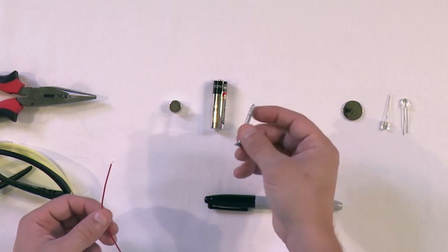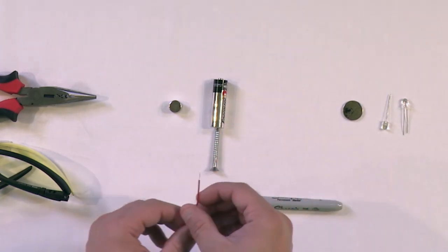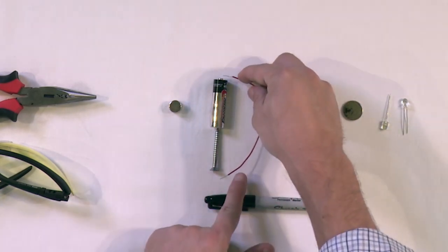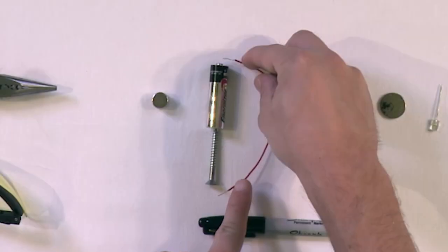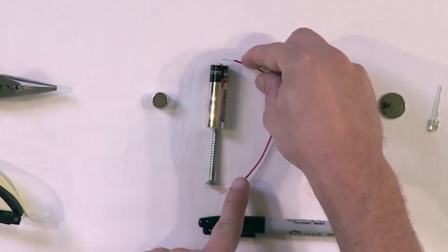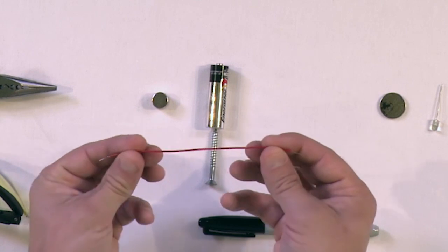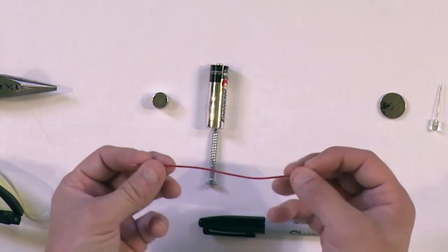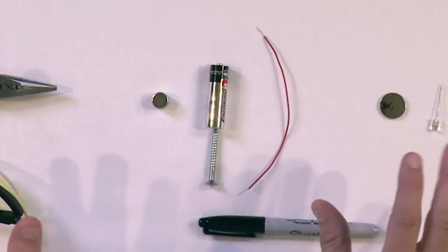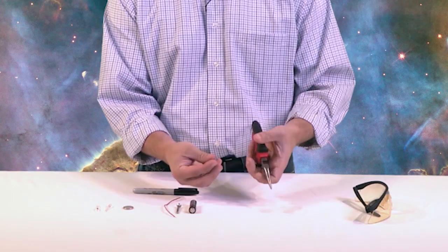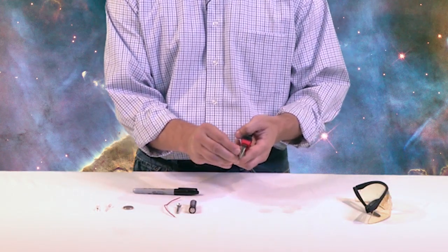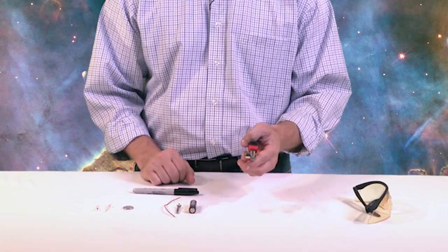All we need to get started is a AA battery, a screw, a piece of wire, and a rare earth magnet. You'll want a piece of wire just long enough to reach from the top terminal of the battery all the way down to the bottom of the screw, where we'll also place a magnet. This is a neodymium magnet and pretty strong. The stronger the magnet, the faster the motor will spin.